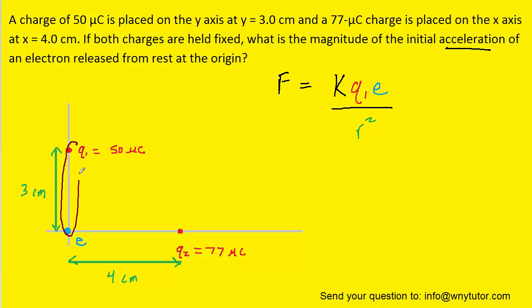We'll start with the force acting between these two charges. Because this charge is positive and the electron is negative, there will be an attractive force acting between those two particles. This means the electron is going to be pulled upward, attracted towards the charge we have labeled q1. We can label this force f1.